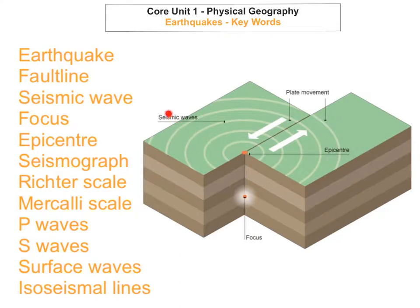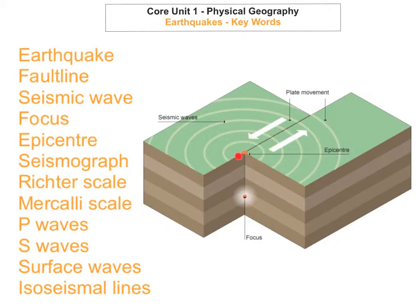The next keyword is seismic waves, which you can see here. These seismic, or sometimes known as shock waves, travel out from the focus. So the focus is the point where the earthquake is strongest in the crust, and the epicenter is the strongest point on the surface. If you imagine dropping a stone into a pond, it sends out waves radiating outward — these are what are known as seismic waves.